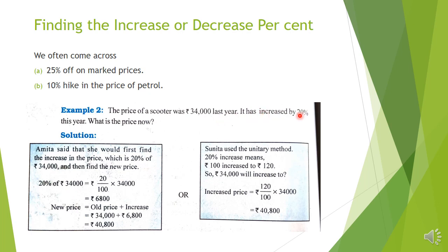Finding 20% of Rs 34,000: 20 by 100 into Rs 34,000. The two zeros cancel, leaving 340 and 20. Multiplying, we get Rs 6,800 as the increase in price. New price equals old price plus increase: Rs 34,000 plus Rs 6,800 gives a new price of Rs 40,800. That is Amita's method.